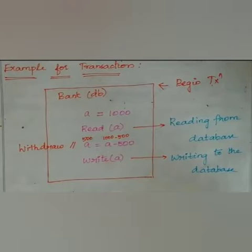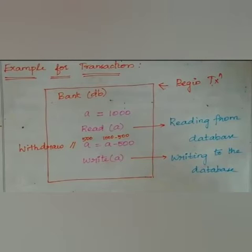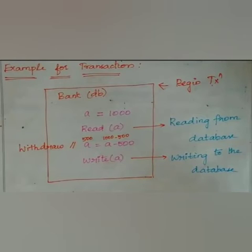In this example, consider a bank database. With a begin transaction, you start with a balance of 1000. When you do a read, you read the value 1000. Then you withdraw 500 rupees. So the operation is: A equals A minus 500. The resulting value of A is 500.